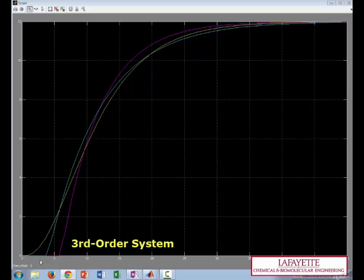The magenta curve is from the Taylor FOPDT. It has the longest dead time. It underestimates the values for the original system until about 9 minutes in. Then it overestimates the values.